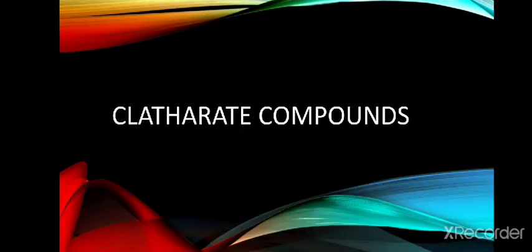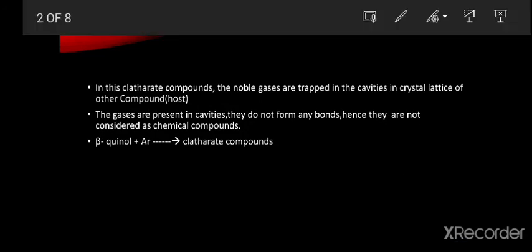We have completed xenon compounds. Now discussing clathrate compounds. In clathrate compounds, there is a host-guest interaction. The host is other compounds, and noble gases like argon, krypton, and xenon are trapped in the cavities in the crystal lattice of the host compound — these noble gases acting as the guest.